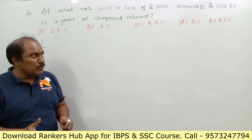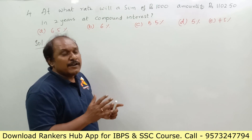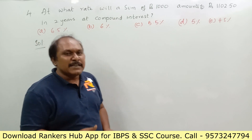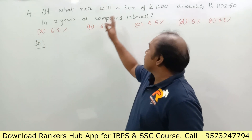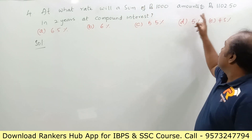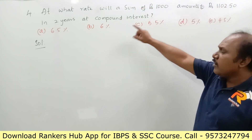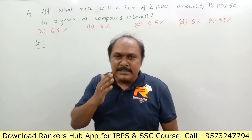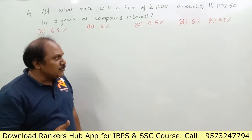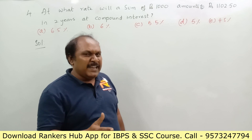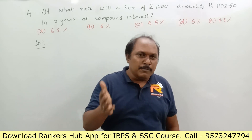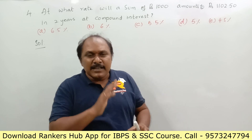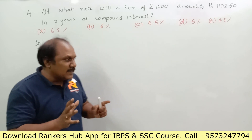Let us see question number four. At what rate will a sum of rupees 1000 amount to rupees 1102.50 in two years at compound interest? The principal is rupees 1000, the amount is 1102.50, the time period is two years, and we are asked to find the rate of interest. Many students try to apply the formula A equals P into (1 plus r by 100) to the power n, but let's see a simpler approach using options.